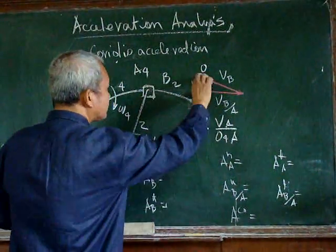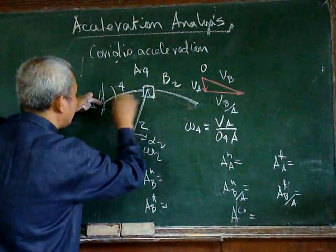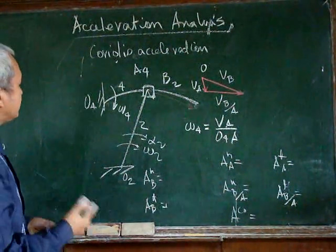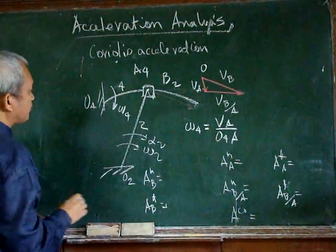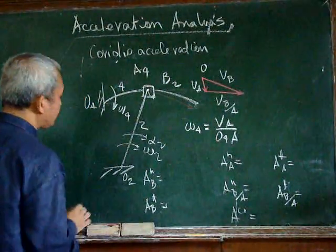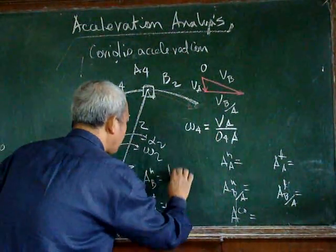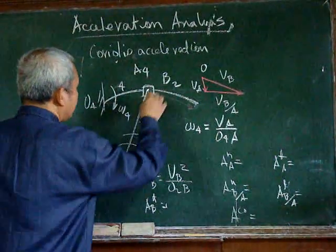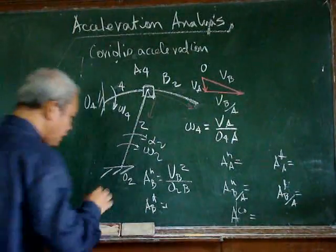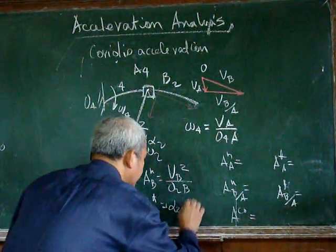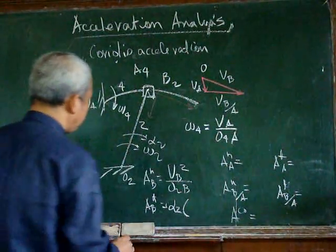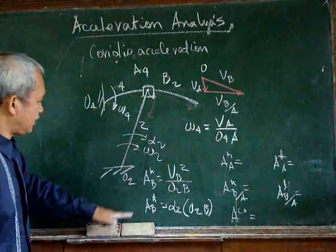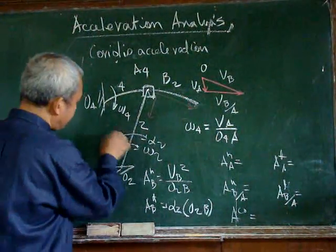Omega 4 equals the velocity of a over O4a, where O4a is that distance. Now, proceeding with the acceleration analysis, consider point b in body 2. That point b has a normal acceleration equal to the velocity of b squared over O2b, directed towards O2. The angular acceleration multiplied by O2b gives the tangential acceleration of point b, directed along that direction.